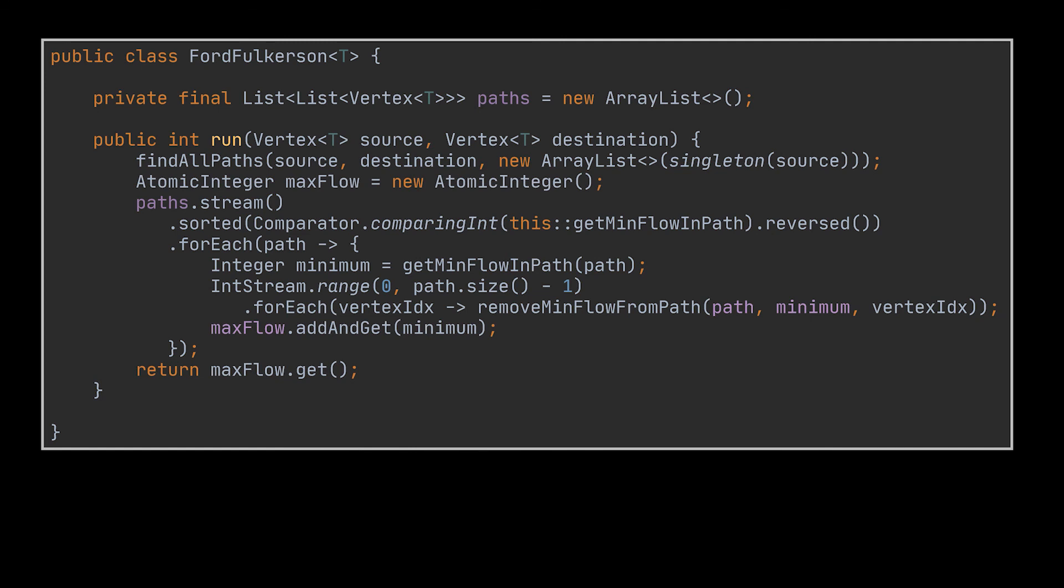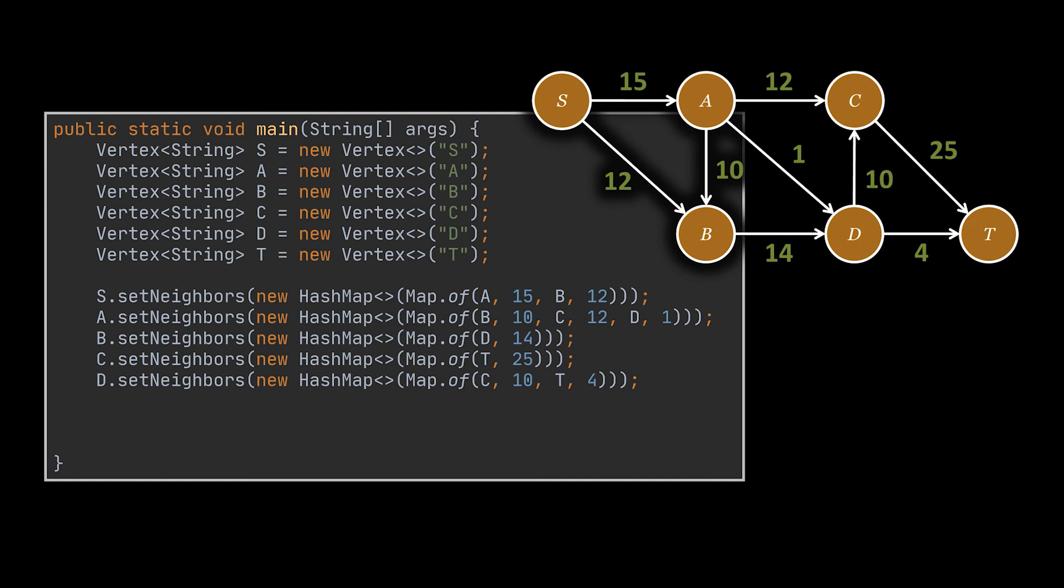And to update and return the max flow we had to use the AtomicInteger class. You see, Java won't allow you to use the normal class in fear that you may be using parallel streams, hence accessing this variable by multiple threads at the same time.